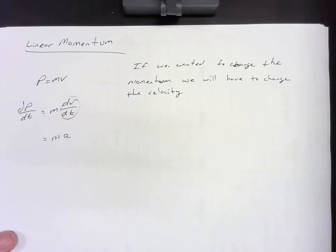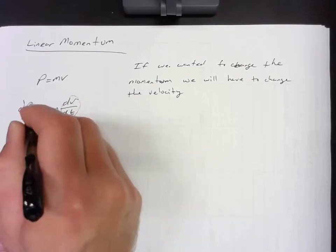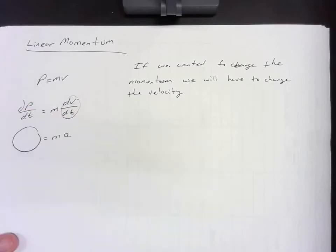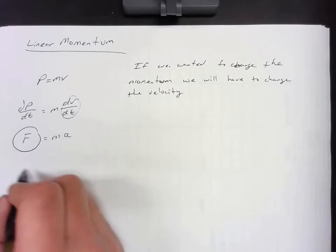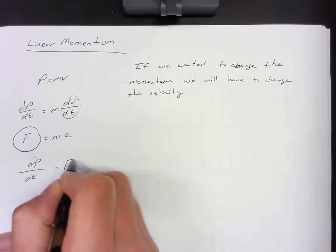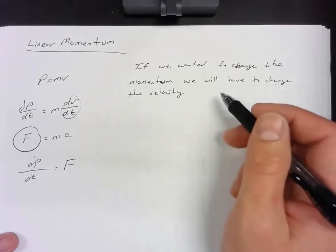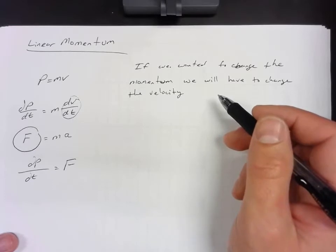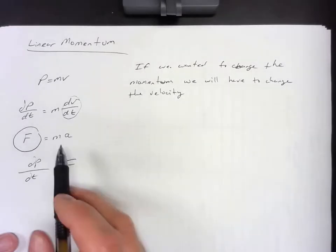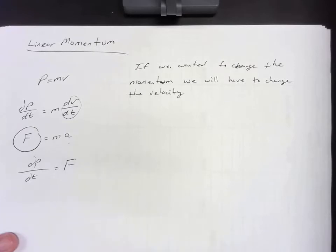I forgot my differential there. So what does that mean for the differential of momentum with respect to time? It has to be force. So in order to change the momentum, we have to change the velocity, which means we have to accelerate it. We accelerate objects by applying a force.